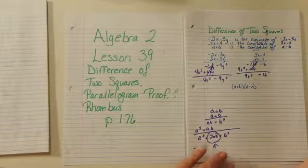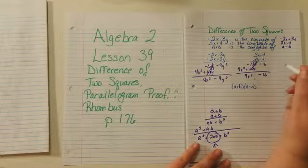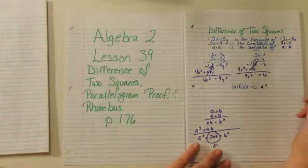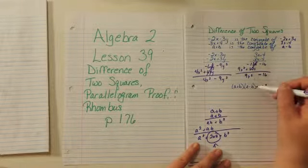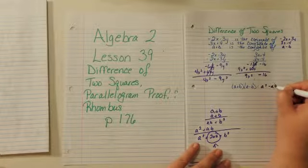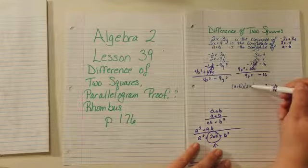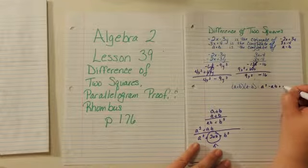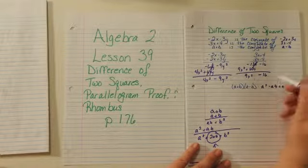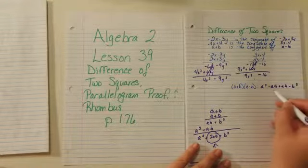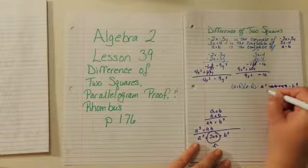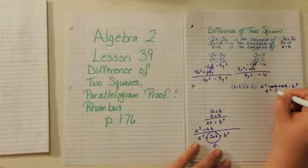We've got a plus b times a minus b. Using the FOIL method: the first terms give a times a, which is a squared. The outside is a times negative b, giving negative ab. The inside is b times a, giving positive ab. And the last are b times negative b, giving negative b squared. Negative ab plus positive ab cancels, and we're left with a squared minus b squared.